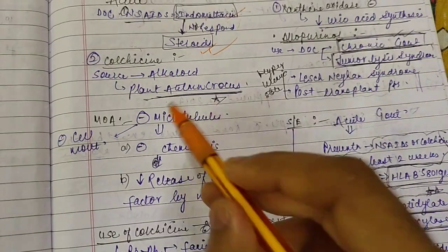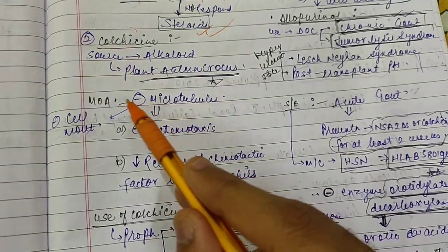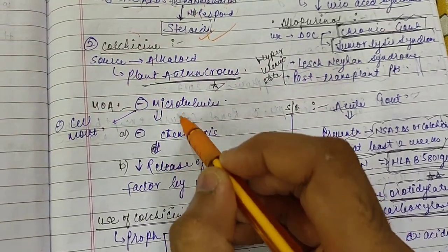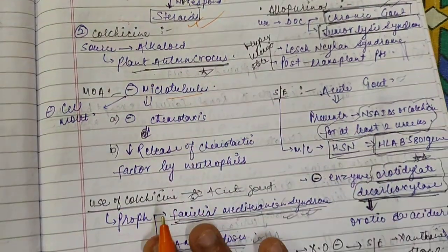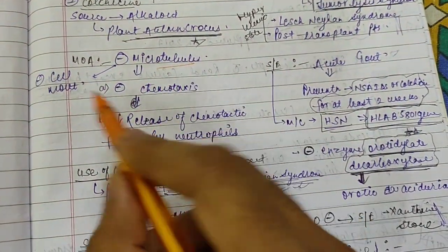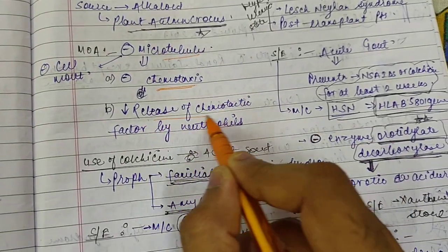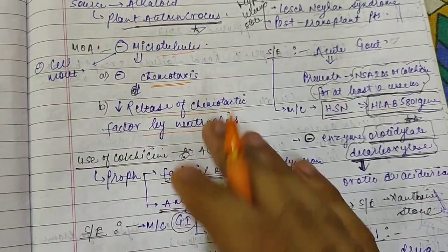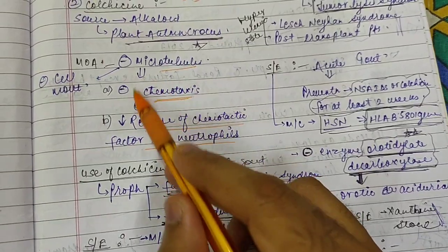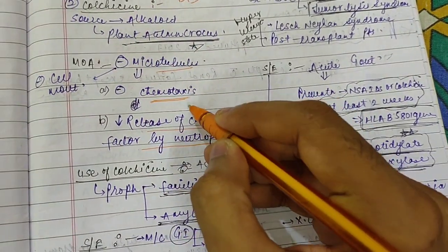Now coming to the second drug, colchicine. The source is plant. Mechanism of action: colchicine inhibits microtubules. By inhibiting microtubules, it inhibits cell movement, so it will inhibit chemotaxis and also decrease release of chemotactic factors by neutrophils.